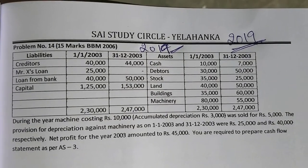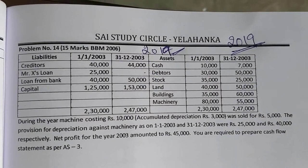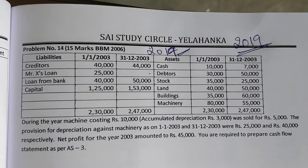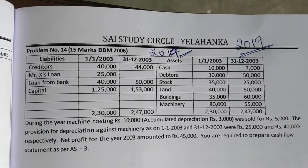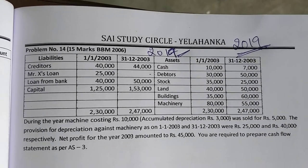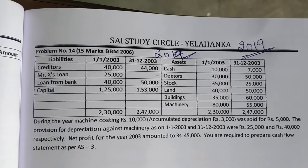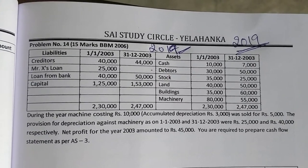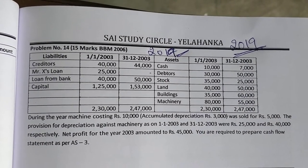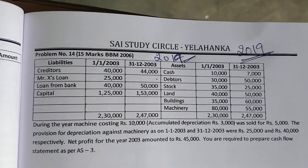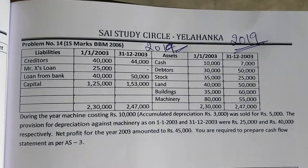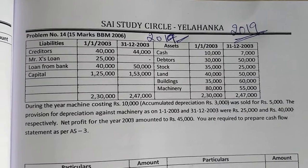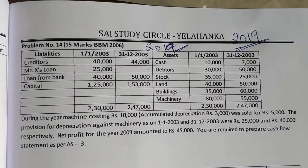This question was given in the year 2019, and also for BBA or BBM students, it was asked in the year 2006. It is a similar type of question — not the same numbers, little changes in the numbers, but all the accounts are the same and all the adjustments are also the same. If we try to solve this question and go through the 2019 question paper, I am sure you will understand.